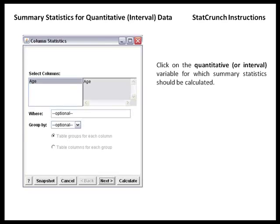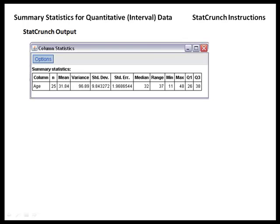In the window that appears, we're going to click on the quantitative variable we would like to calculate summary statistics for. In this case, it's age. Once you've selected that variable, all you have to do is click Calculate, and in the output that appears,